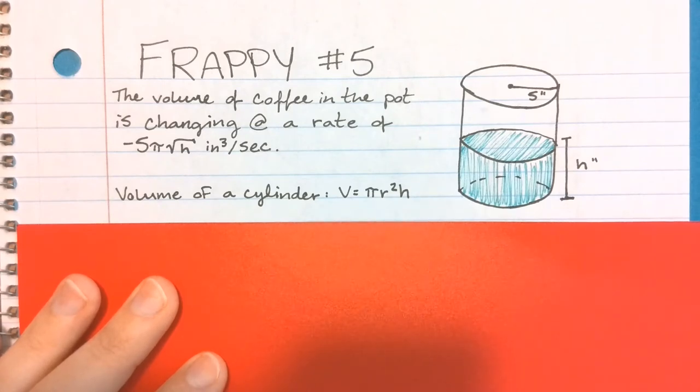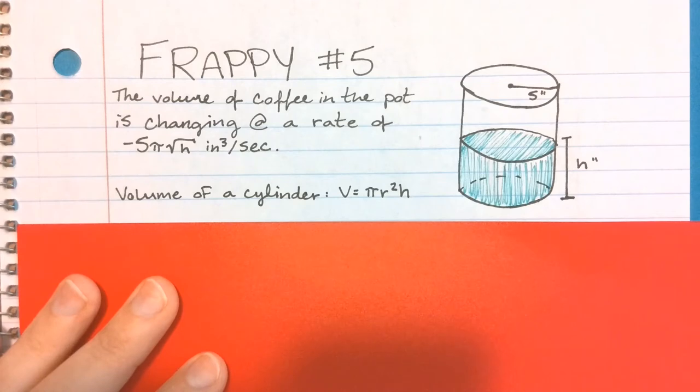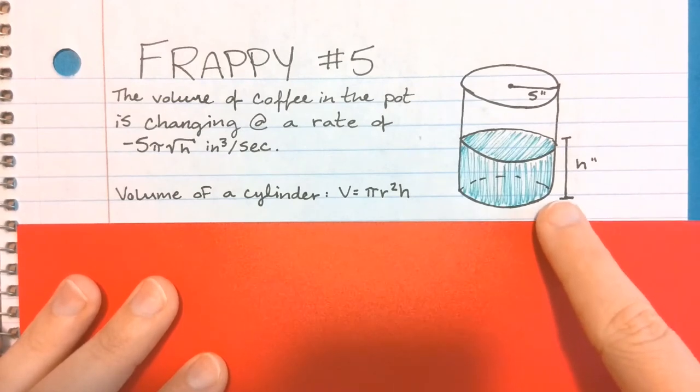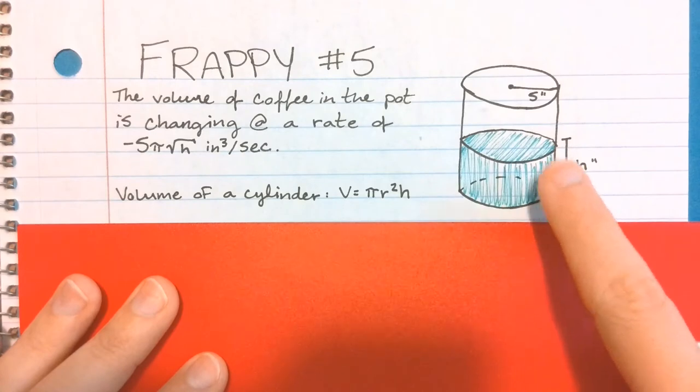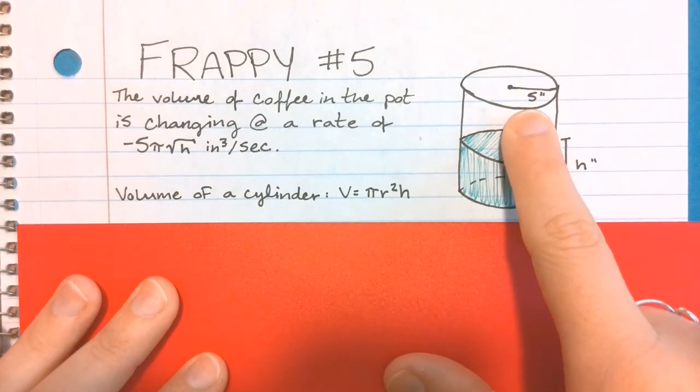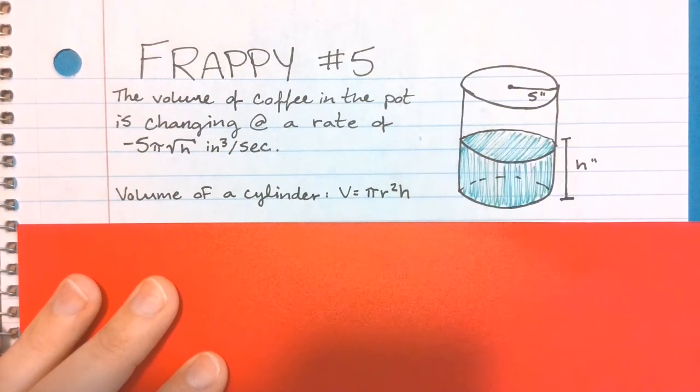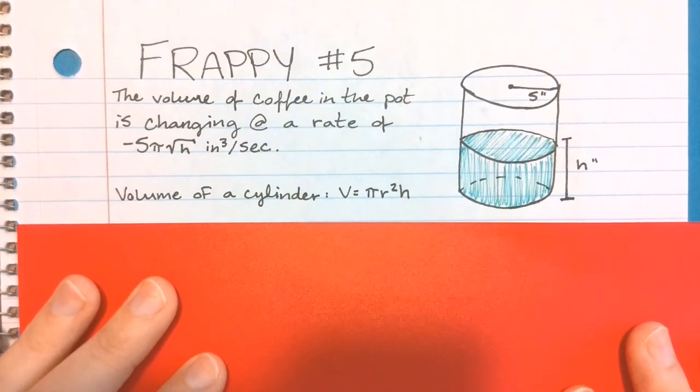For part A, they want us to verify something. We want to show a lot of work, make sure it's clear we know what we're talking about. We're showing that dh/dt equals negative √h over 5. Before we jump into taking the derivative, I want you to notice that in this situation, as the height of the coffee rises and falls, the radius does not change. It's going to be 5 inches no matter what. This isn't like a cone full of coffee, it's a cylinder. That radius does not have a dr/dt because it doesn't change.